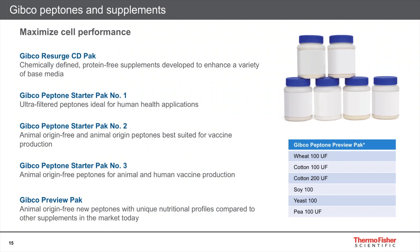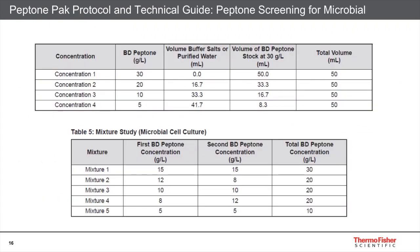We also have a GIBCO research CD pack for five different chemically defined supplements. We have a comprehensive Bio-Nutrient Manual available with detailed protocols and guides on how to screen, titrate, and blend peptones. As mentioned, peptones from different sources provide different nutrient mixtures — some organisms prefer blends. It is ideal to execute a screening study where different peptone types are evaluated.